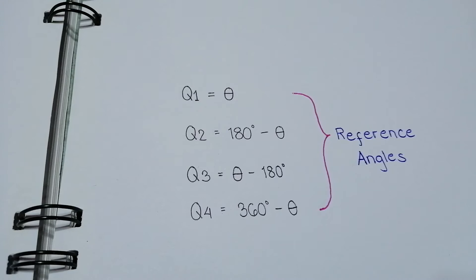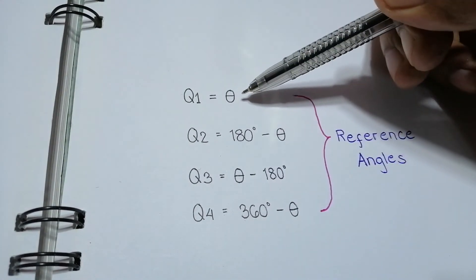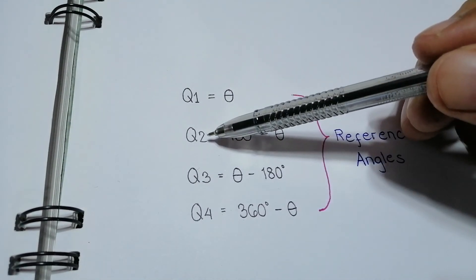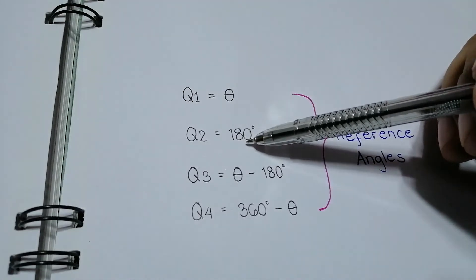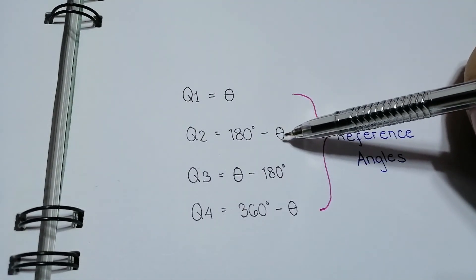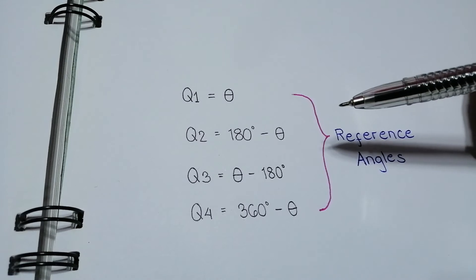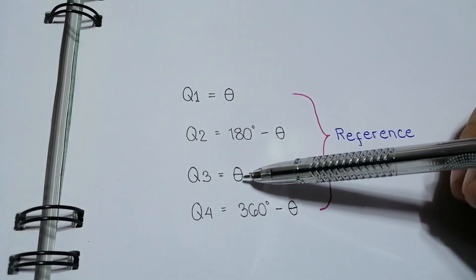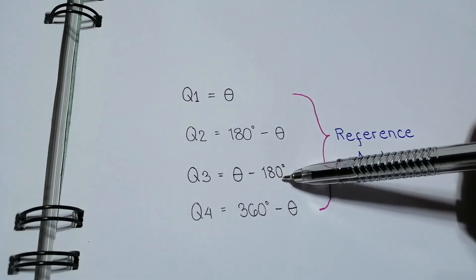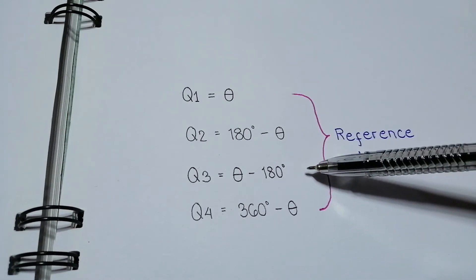These are some helpful formulas in getting or determining the reference angle. If the angle is already at the first quadrant, that angle is already our reference angle. At the second quadrant, to get the reference angle, we subtract 180 degrees by the given angle — that gives us the acute angle formed by the terminal side and the negative x-axis. If our terminal side is at the third quadrant, we simply subtract the given angle by 180 degrees to get the acute angle formed by the terminal side and the negative x-axis.